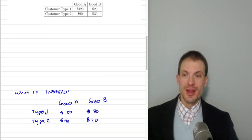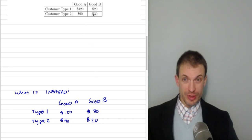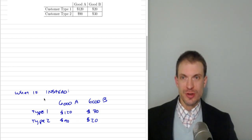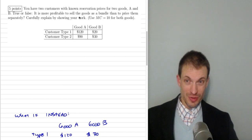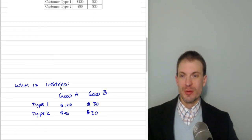What if instead consumer of type 1 would pay $120 for good A and $30 for good B, and type 2 would pay $90 for good A and $20 for good B? These are essentially the same willingness to pay values — it's just that now the high willingness to pay is always our type 1 consumer. These would be positively correlated preferences. For this what-if example, it's going to be false that bundling is more profitable than pricing separately.